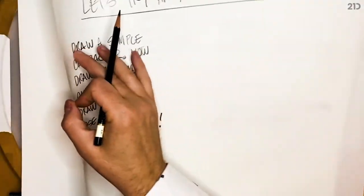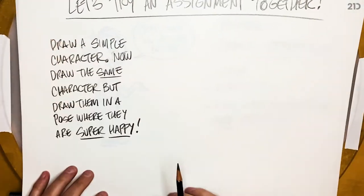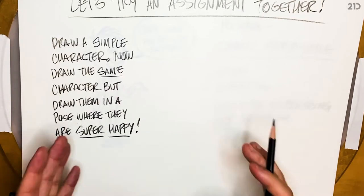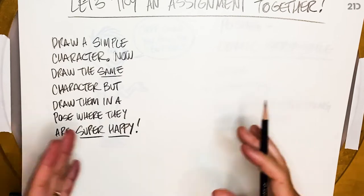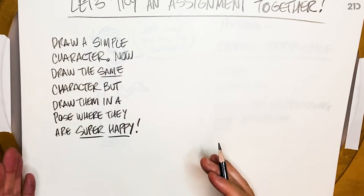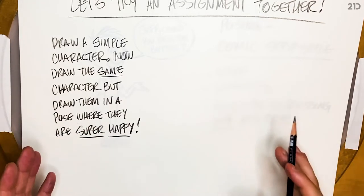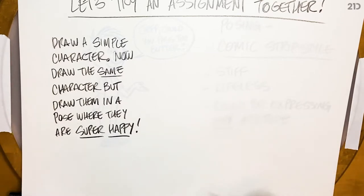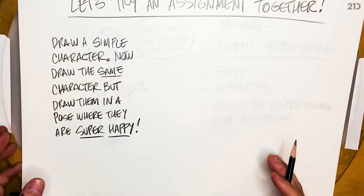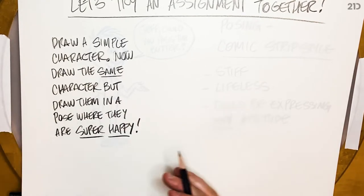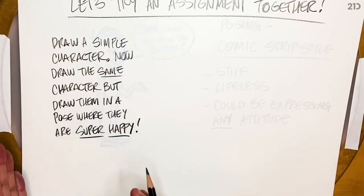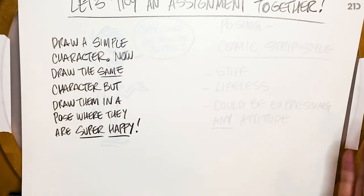I want to challenge you at home watching this video series — let's make an assignment together. I'm going to have you stop the video, draw a character, your own OC, in a regular neutral pose. Then draw that same character in a pose where they're super happy. How does feeling that emotion change your character design and pose? How do you communicate that within the same design? Pause the video, draw a simple character in a neutral pose, then that same character super happy.